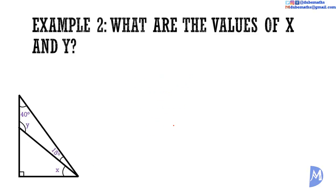Example 2: What are the values of X and Y? For clarity, let us name this triangle A, B, C, D. Considering the inner triangle — the top triangle A, B, D.